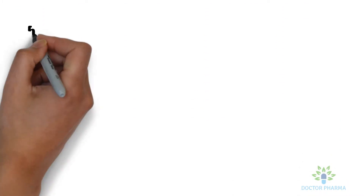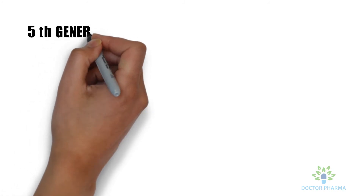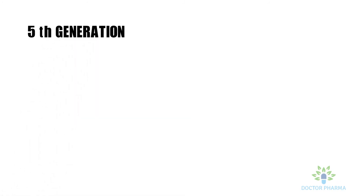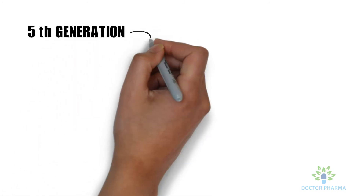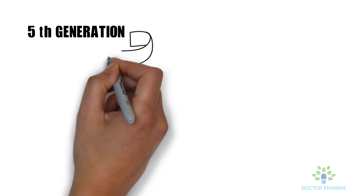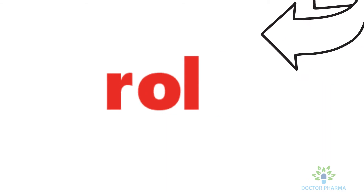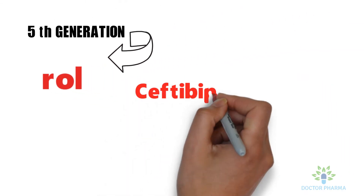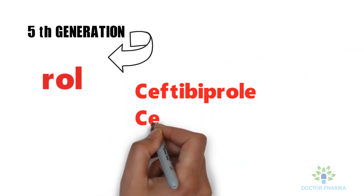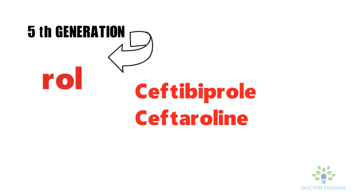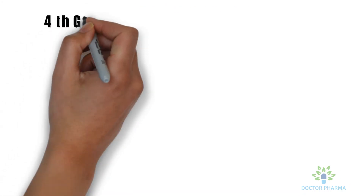Let's discuss the fifth generation for easy understanding. In the fifth generation, all drugs have the common letters R or L — for example, ceftobiprole and ceftaroline. They have R or L in their names, making them easy to identify.